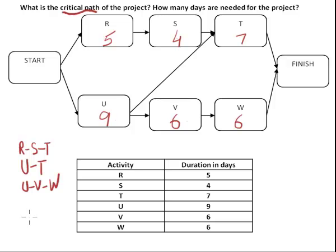Let's add R, S, T first. So R, S, T is 16. It's the sum of R plus S plus T. U, T is also 16. It's U plus T. And path U, V, W is 21. It's U plus V plus W. So it's 21.